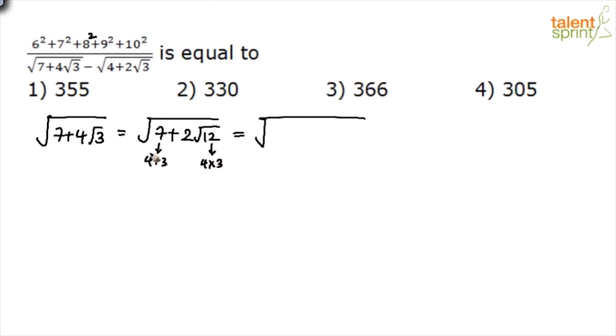Split 7 as 4 plus 3 and split 12 as 4 times 3. We're trying to get this in the form a squared plus b squared plus 2ab. So 4 is root 4 whole squared, plus 3 is root 3 whole squared, plus 2 root 12 is 2 times root 4 times root 3. This is a squared plus b squared plus 2ab, which is a plus b whole square. Rewriting gives root 4 plus root 3 whole squared. Under root and square cancel, leaving root 4 plus root 3, which is 2 plus root 3.